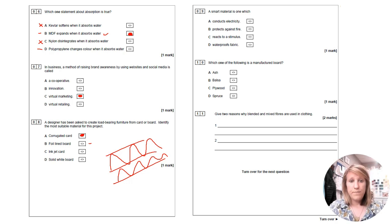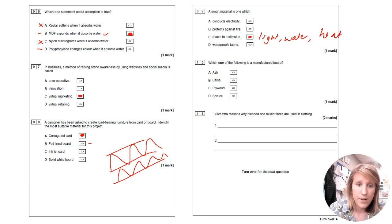A smart material is one which conducts electricity. I guess one of them does. Shape memory alloy probably would. Protects against fire, no. Reacts to a stimulus, yes. So they react to light, they react to water, to electrical current, to heat, all sorts of things. And no, they don't waterproof fabric. So that one is reacts to a stimulus.